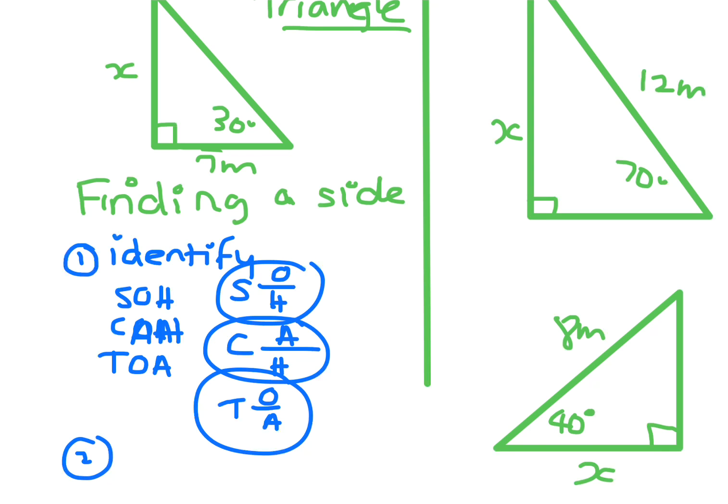So if we look at the triangle, the opposite side, if you draw an arrow, the X there will be opposite. The one that is right next to the 30, that's the 7, that is the adjacent. This one here is the hypotenuse.